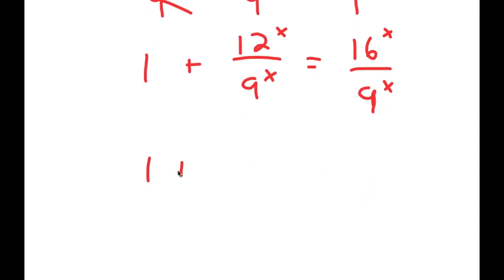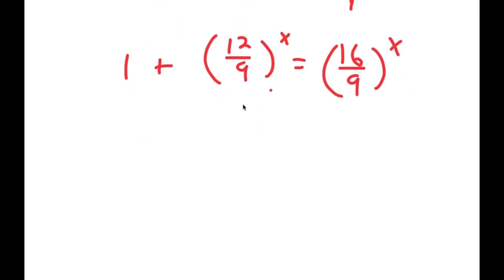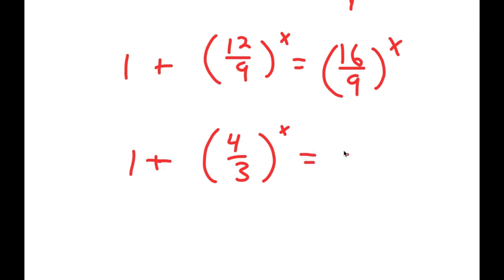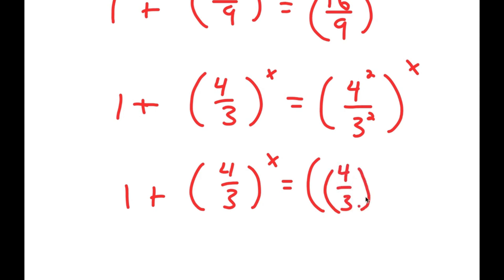From here I can rewrite this as 12 over 9 to the power of x, and 16^x over 9^x I can rewrite as 16 over 9 to the power of x. Now 12 over 9 simplifies to 4 over 3, and 16 over 9 simplifies to 4 squared over 3 squared.